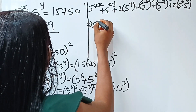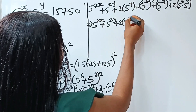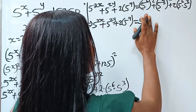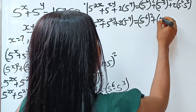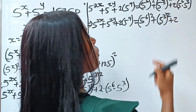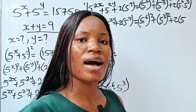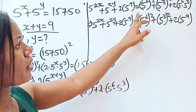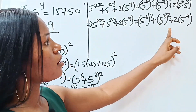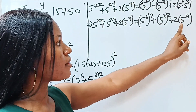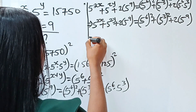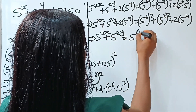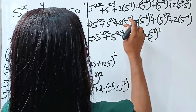So we have 5 to the power of 2x plus 5 to the power of 2y plus 2 multiplied by 5 to the power of 9, equal to 5 to the power of 6 squared plus 5 to the power of 3 squared plus 2 multiplied by 5 to the power of 9 — since 6 plus 3 is 9. Notice that we have 2 bracket 5 to the power of 9 on both sides with the same sign. Transferring it gives minus, so they cancel out, leaving 5 to the power of 2x plus 5 to the power of 2y equals 5 to the power of 6 squared plus 5 to the power of 3 squared.